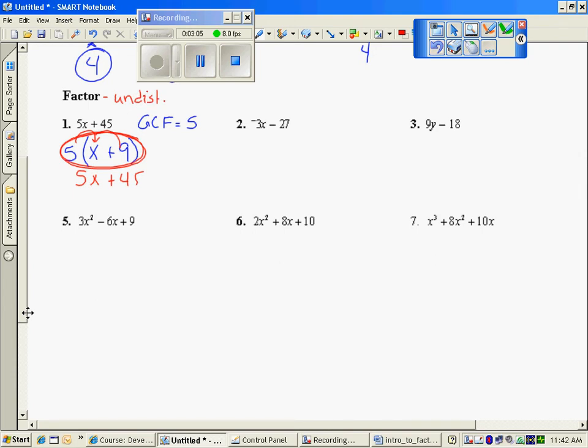If we look at question number 2, it looks like they both share a negative, the negative 3x and the negative 27, and they share a 3. So what times negative 3 is negative 3x? Well, that would be an x. What times negative 3 is negative 27? That would be a positive 9.